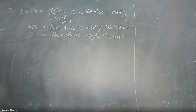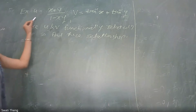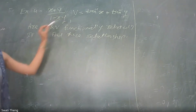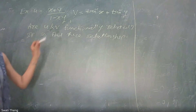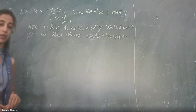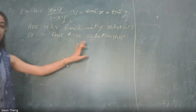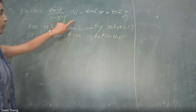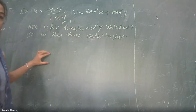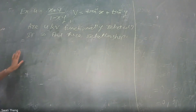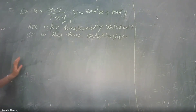To check if u and v are functionally related, we use the Jacobian. The Jacobian of u and v with respect to x and y must equal zero. If it is zero, then u and v are functionally related. Second, to find their relationship, we eliminate x and y from the two equations to get an equation purely in u and v.